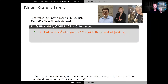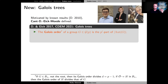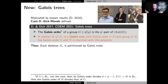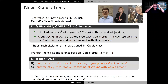We defined the Galois order of a group in this graph to be the p-prime part of its automorphism group. Two things to note: if the group is not a root of a branch, the Galois order always divides p minus 1; and if you have a descendant in that branch, the Galois order of the descendant divides the Galois order of the original group. This allows us to define Galois trees — a tree within the pruned skeleton where all groups have the same Galois order, and these trees are as large as possible. The whole skeleton is partitioned by these Galois trees.